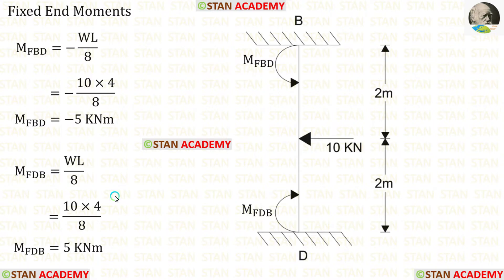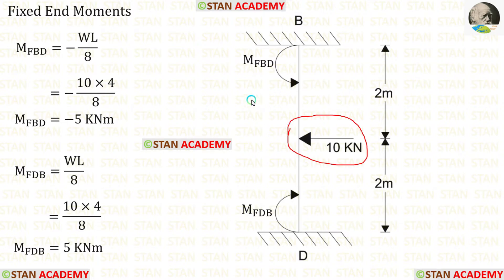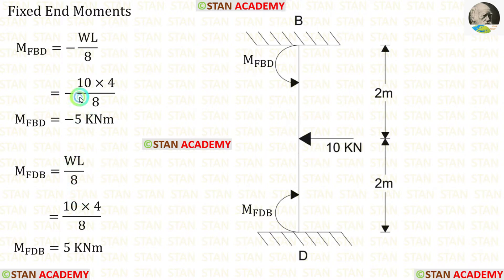Now let us find the fixed end moments in the column BD. Here there is a point load of 10 kN acting at the center. The formulas to find the fixed end moments are −WL/8 and +WL/8. When we apply the values inside the formulas we are getting M_BD and M_DB.